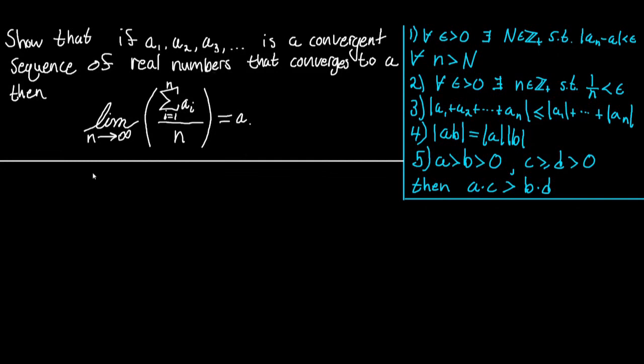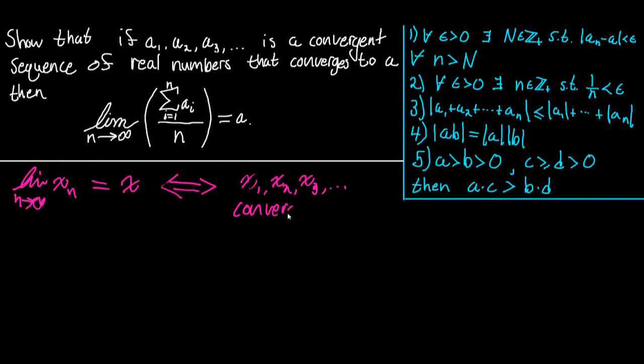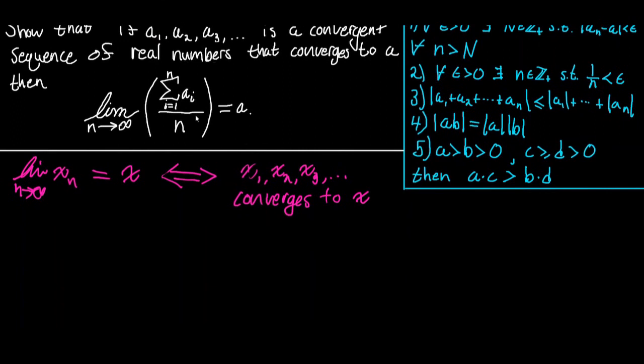What does it mean when we say the limit as n goes to infinity of the sequence xₙ equals some value x? This is equivalent to saying that the sequence x₁, x₂, x₃, and so on converges to x. So if we want to show that the limit of this expression equals a, then we want to show that the sequence of partial averages converges to a.